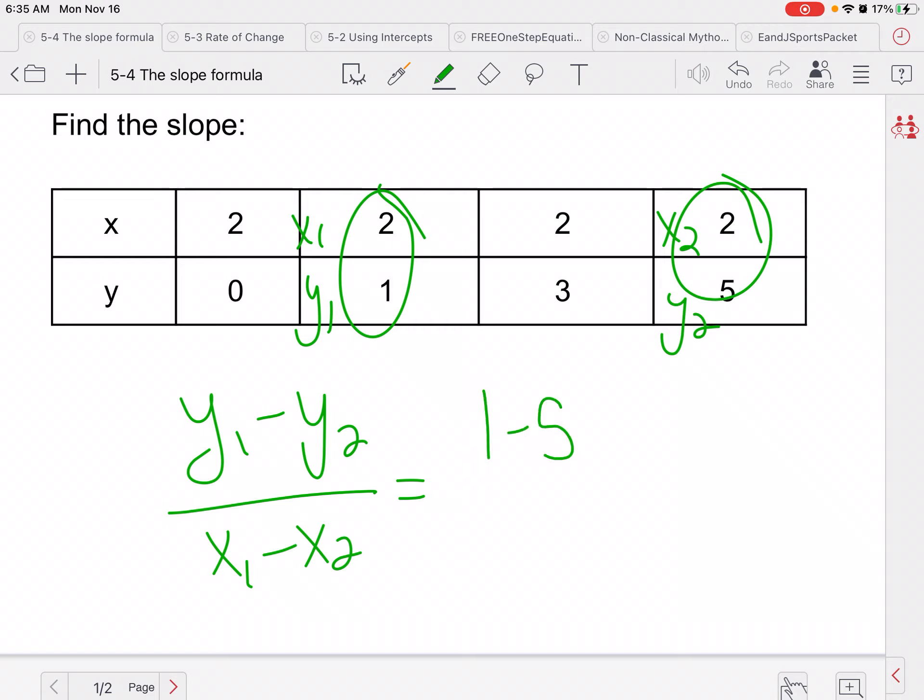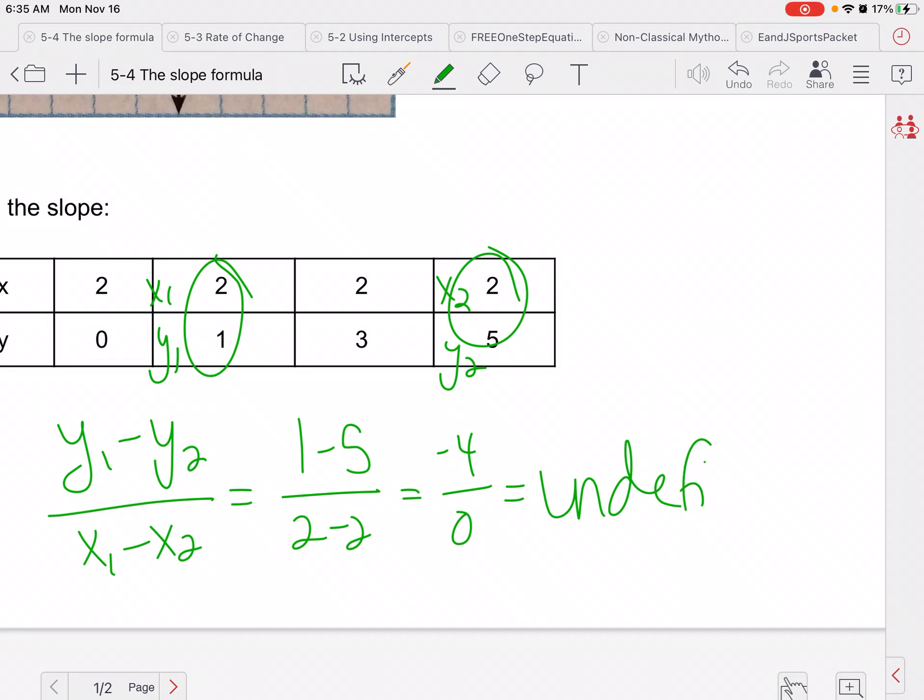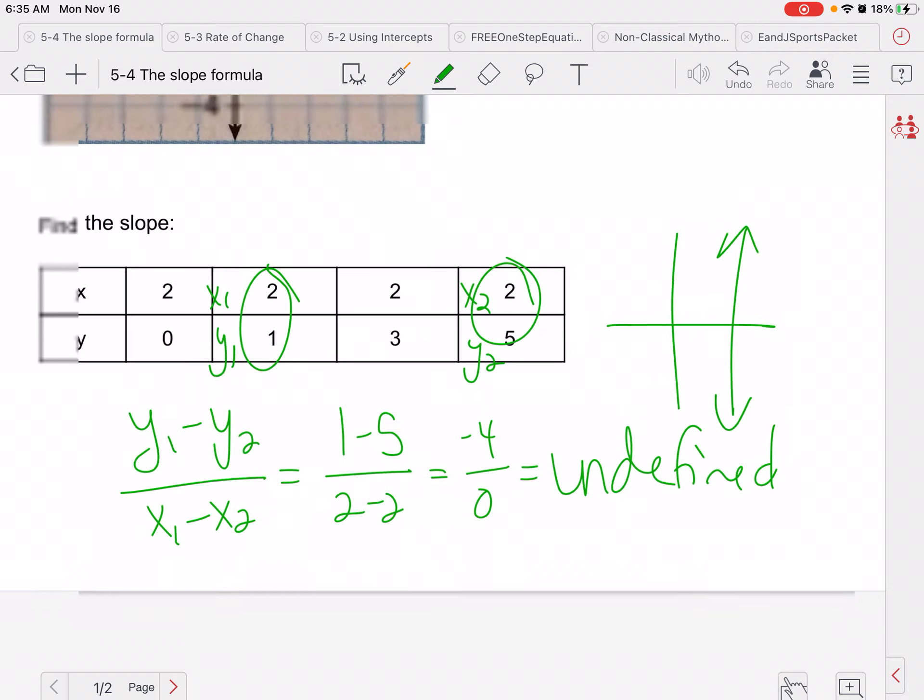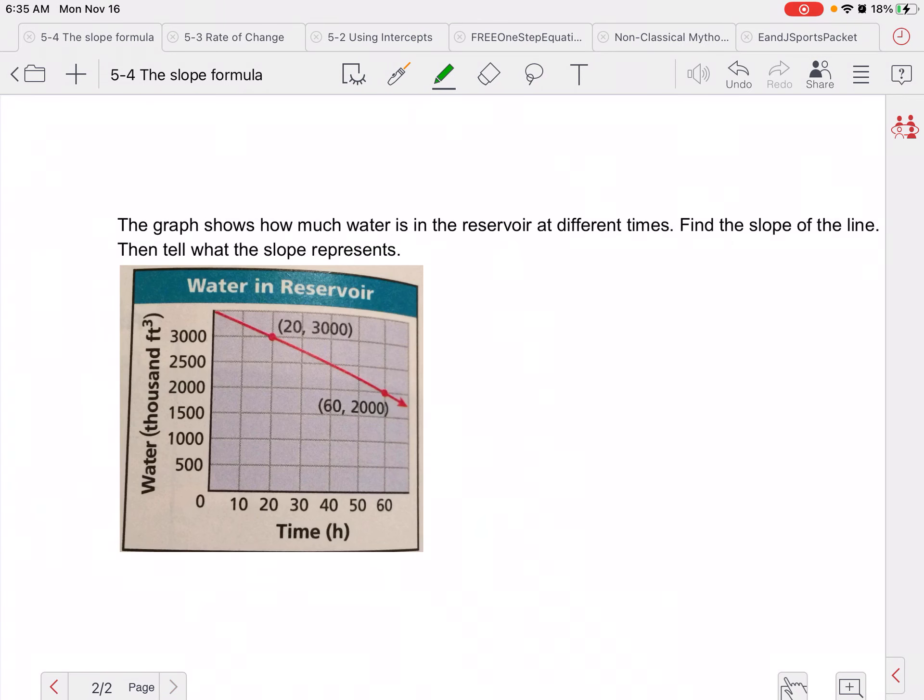So 1 minus 5 over 2 minus 2. Well, 1 minus 5 is negative 4. 2 minus 2 is 0. Anytime we're dividing by 0, that cannot happen. That is undefined. So if we remember, based on yesterday's lecture, if we're looking at that line, it would be a vertical line because it is a undefined slope. We don't like to go skiing down that slope.